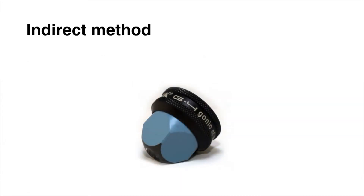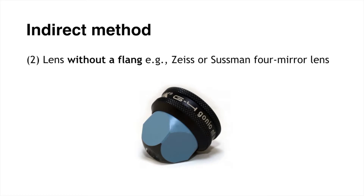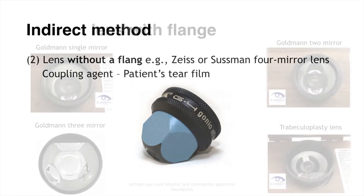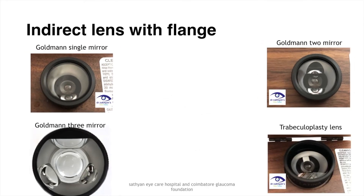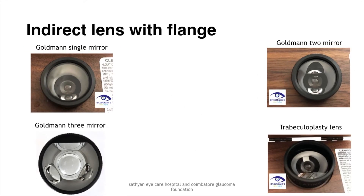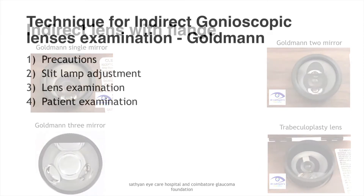We also have a lens without a flange, which is a Zeiss or a Sussman, where the patient's own tear film can be used. The Goleman single mirror, Goleman 2 mirror, Goleman 3 mirror, and the trabeculoplasty lens all have a flange.